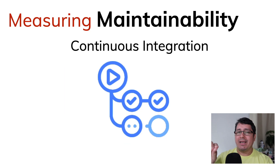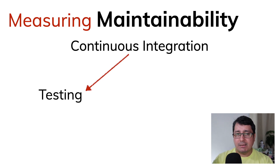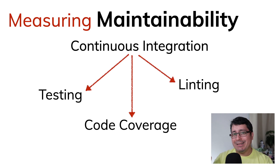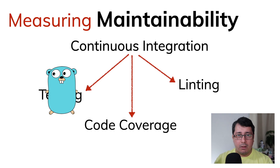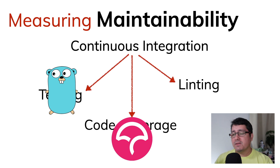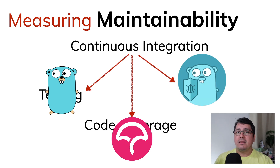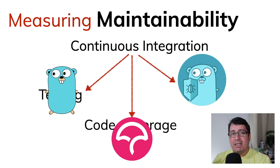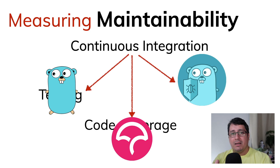For our example we're going to be using GitHub Actions, and the three things we'll be running through continuous integration are: running tests, running code coverage, and running linters. Specifically, for testing we'll use the regular go test standard library testing package. For code coverage we'll use a service called CodeCov, and for linting we'll use probably the most popular one, golangci-lint.